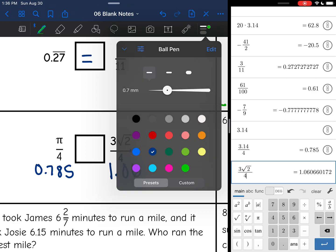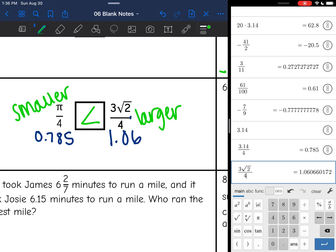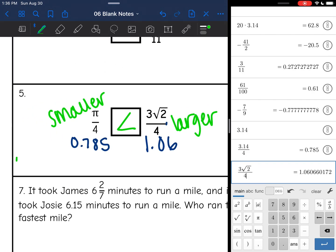So then it's super easy since they're both decimals. I can tell that pi over 4 is the smaller one, and 3 times the square root of 2 divided by 4 is the larger one. So I'm going to have the less than symbol. And that statement would read pi over 4 is less than 3 square root of 2 divided by 4.